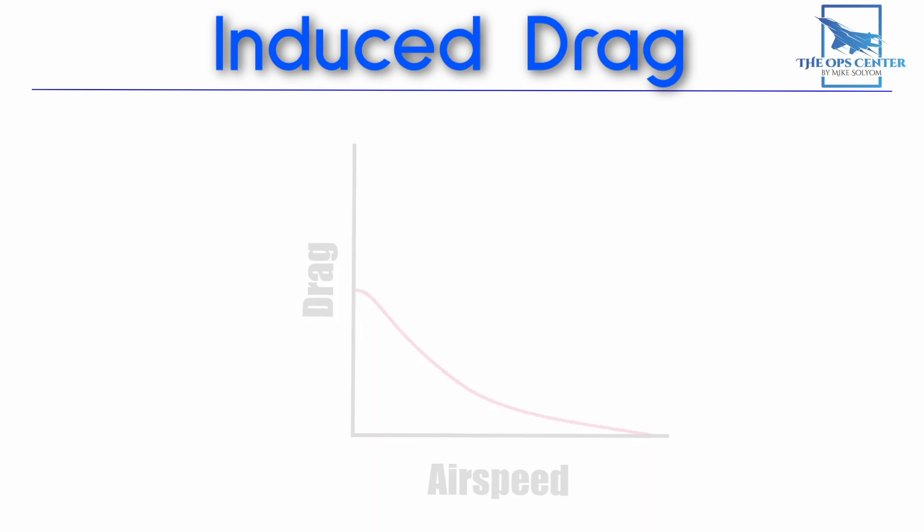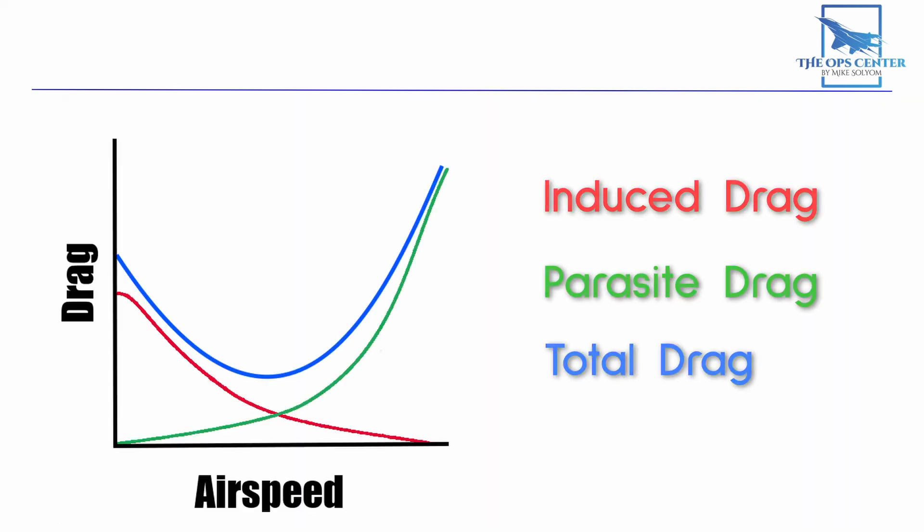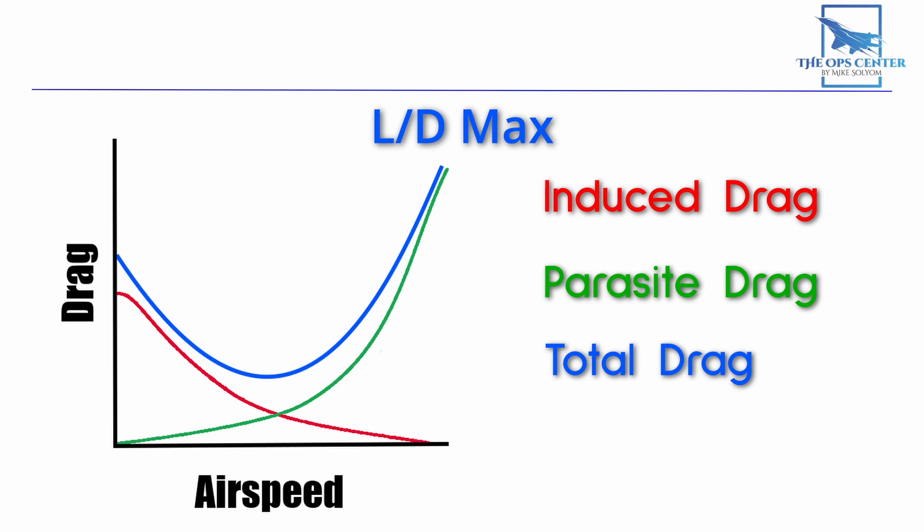Induced drag is the reason why fighters in a tight-turning dogfight are constantly losing speed — and it only gets worse as the plane slows down. When you combine induced drag with parasite drag, you end up with a chart where changing speed makes one type of drag go up while the other goes down. Where the lines meet is where combined drag is lowest — referred to as LD max, which means the maximum lift-to-drag ratio. This is the speed where you get the least amount of total drag, useful for maximizing range, endurance, climb angle, and glide range.